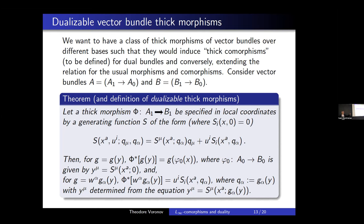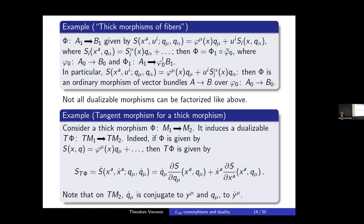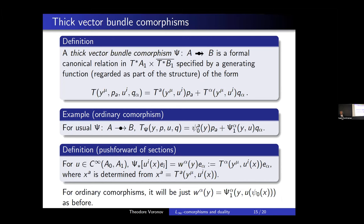For thick morphisms of vector bundles there is a notion of fiberwise linearity, which can be described in terms of graded weights. Linearity means you have non-linear mappings but linear functions are mapped to linear functions in a non-linear way. We need to define a particular class of thick morphisms. Ordinary comorphisms are a special case of such thick morphisms. The pushforward of sections is defined and is a non-linear mapping.